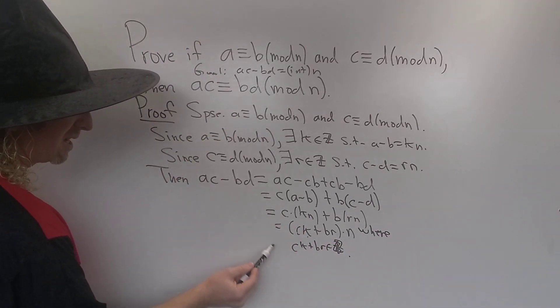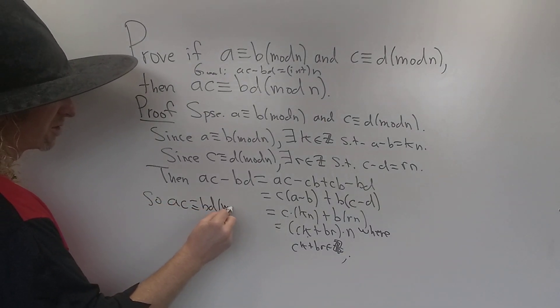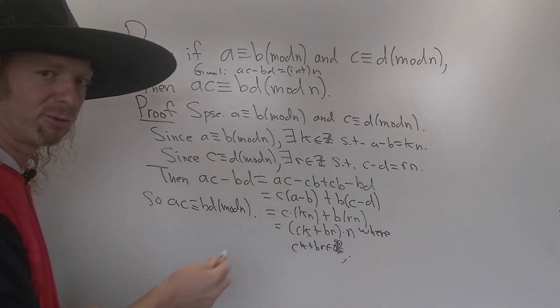So AC minus BD is a multiple of N. So this means that AC is congruent to BD modulo N. So that's the key part right there in the proof.